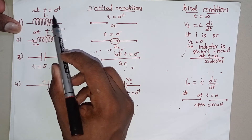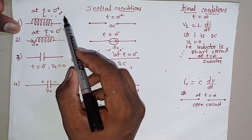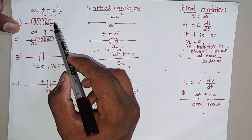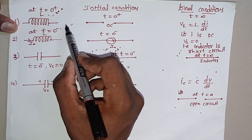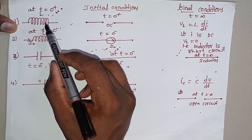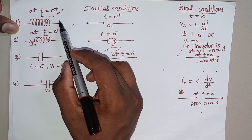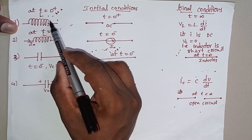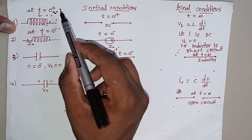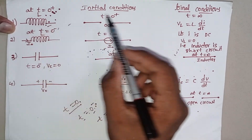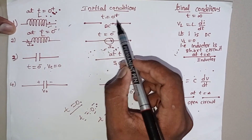Consider an inductor at T = 0+. Up to that point, there is no current flowing in the inductor; at T = 0+ there is a sudden change of current entering the inductor. The inductor always opposes the sudden change of current — opposing means it acts as an open circuit. So at T = 0+, the inductor acts as an open circuit (OC).